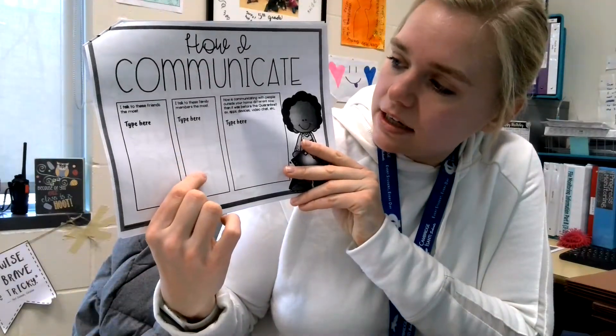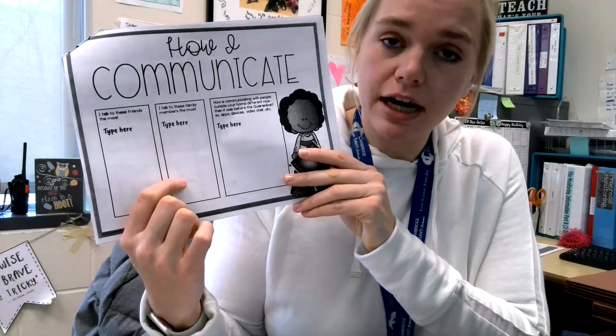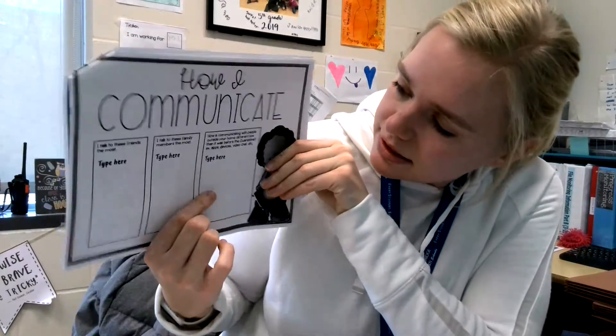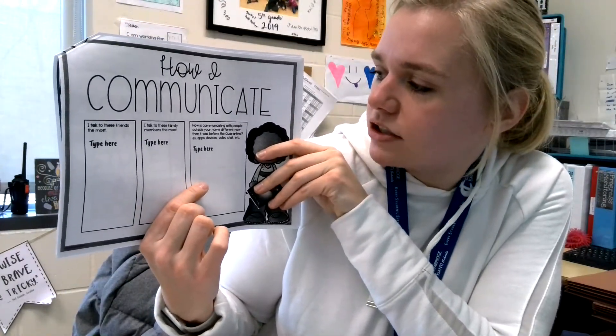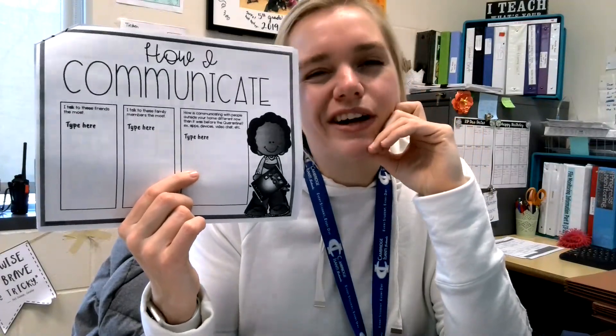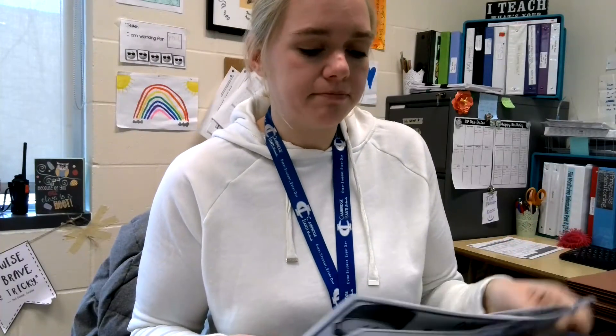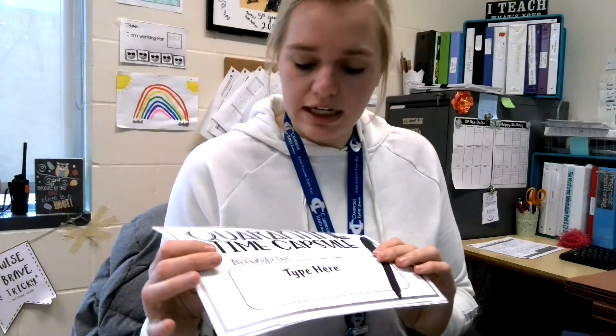The next box is 'I talk to these family members the most' — who do you talk to in your family? For me, I talk to my mom all the time, so I would write her name in there. And then this next one is: how is communicating with people outside your home different now than it was before quarantine? Before quarantine you could just talk to people at school during lunch, but now you're at home. I know one student who did a video chat with her cousins for Thanksgiving so she could see them. So do that page in your quarantine time capsule workbook for today.